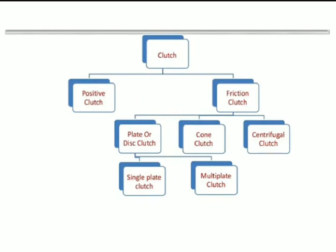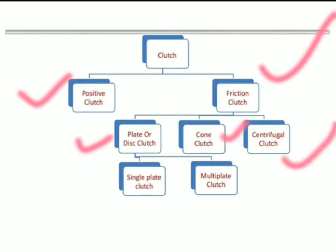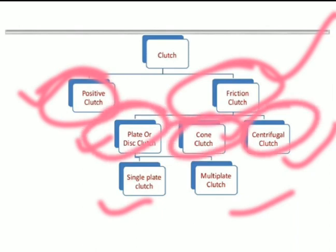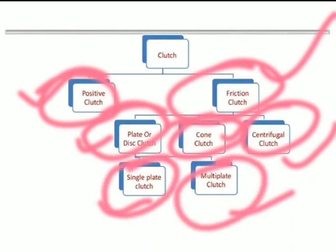Now, the classification of Clutch. Clutch is mainly classified into two types: positive Clutch and friction Clutch. Friction Clutch is further classified into three types: plate or disc Clutch, cone Clutch, and centrifugal Clutch. The plate or disc Clutch is further classified into two types: single plate Clutch and multi-plate Clutch. So the hierarchy is: positive and friction; friction has plate/disc, cone, and centrifugal; and plate/disc has single and multiple.